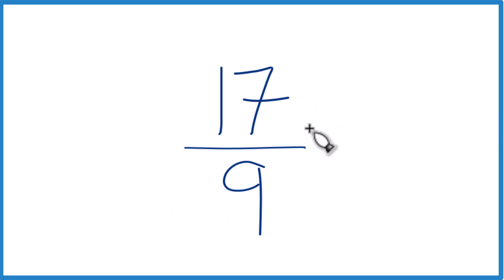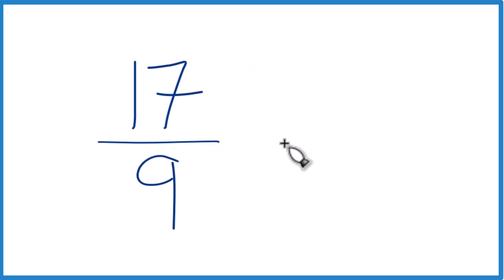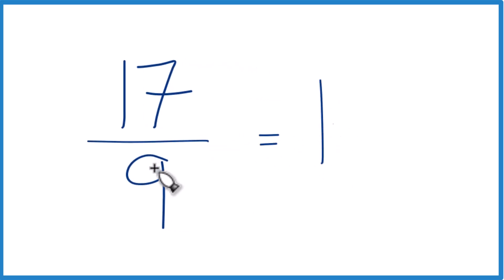The way to do that: 9 goes into 17 just one time. 1 times 9 is 9, and we'd have 8 left over. So that 8, that remainder, becomes the numerator, and we keep the 9 as the denominator. That's it. 17 ninths, that improper fraction, equals the mixed number 1 and 8 ninths.